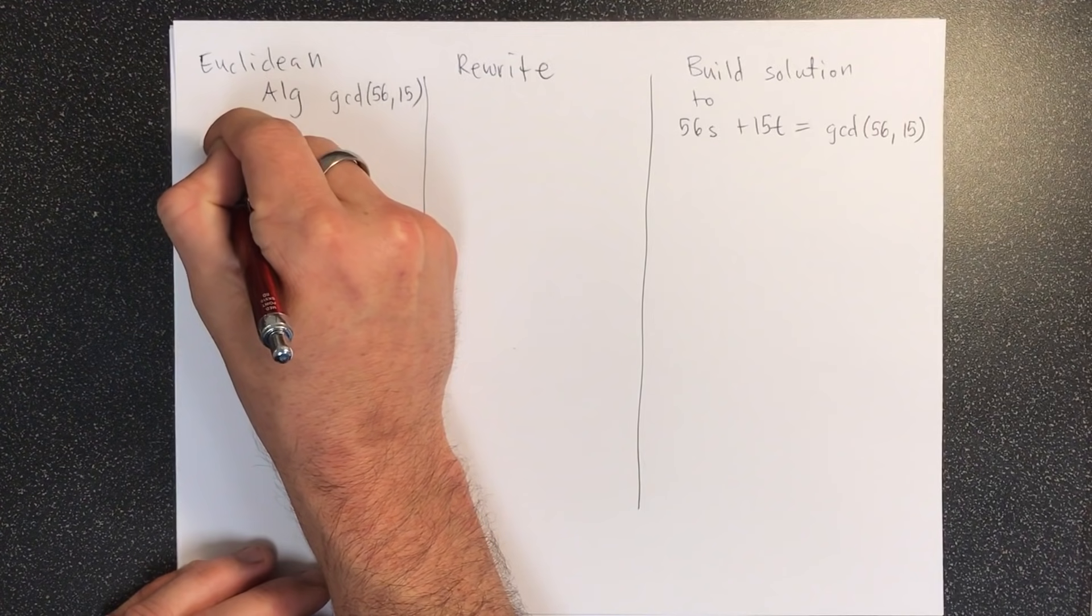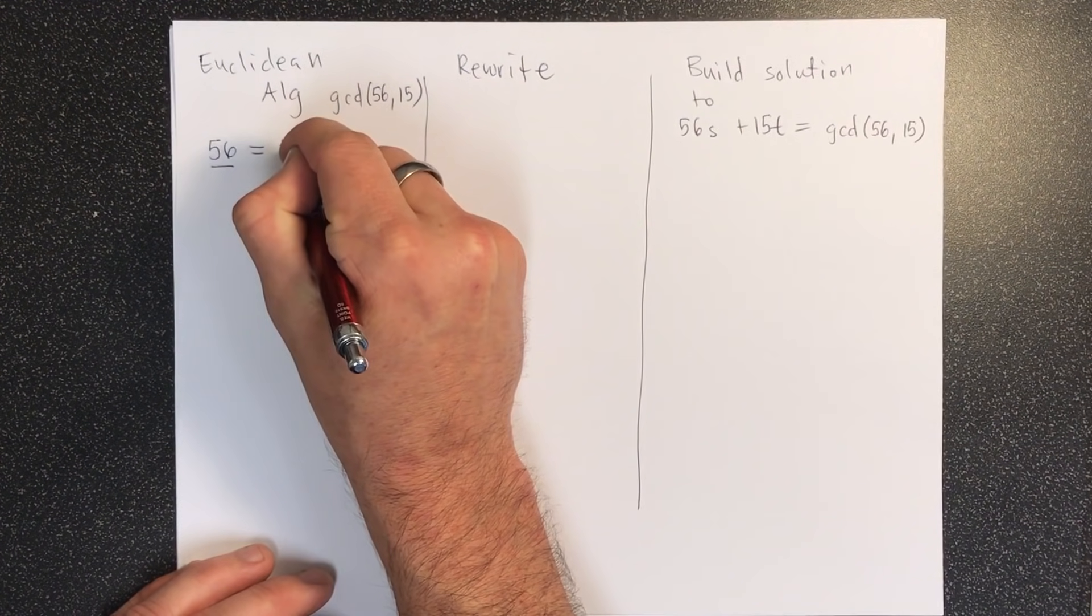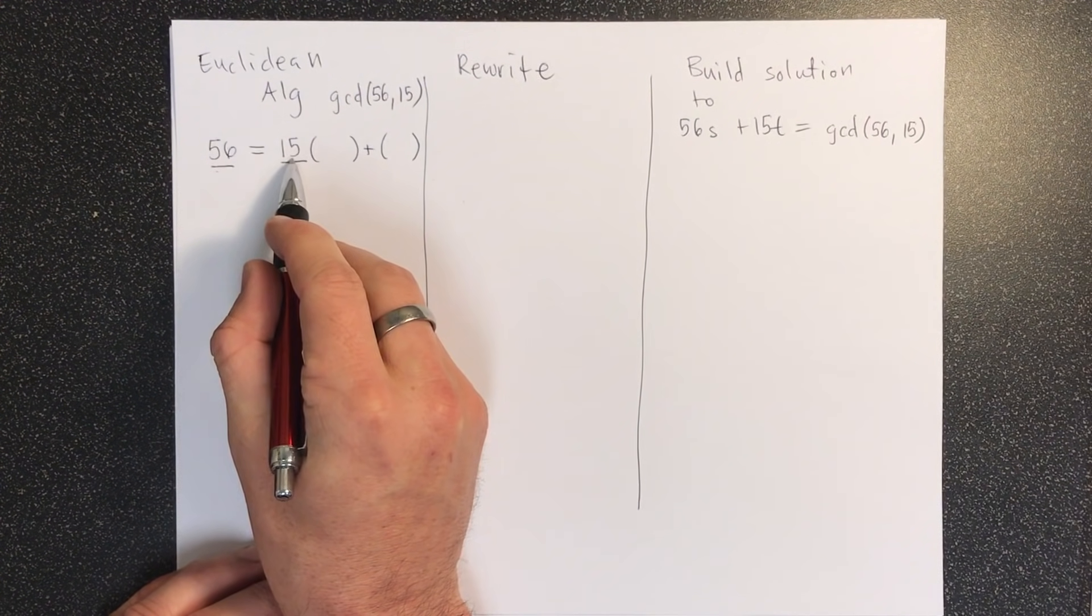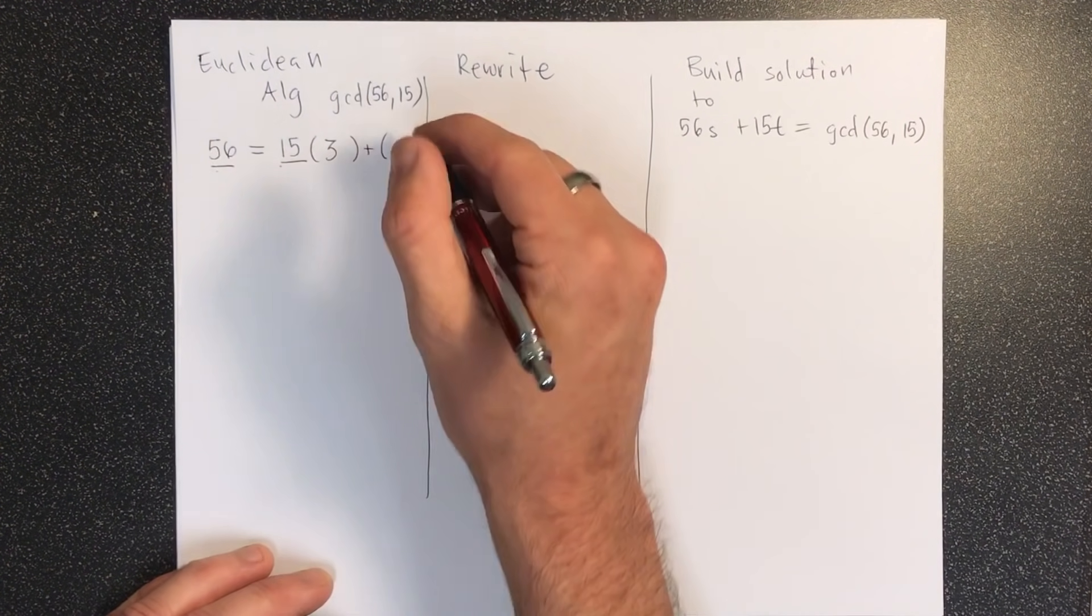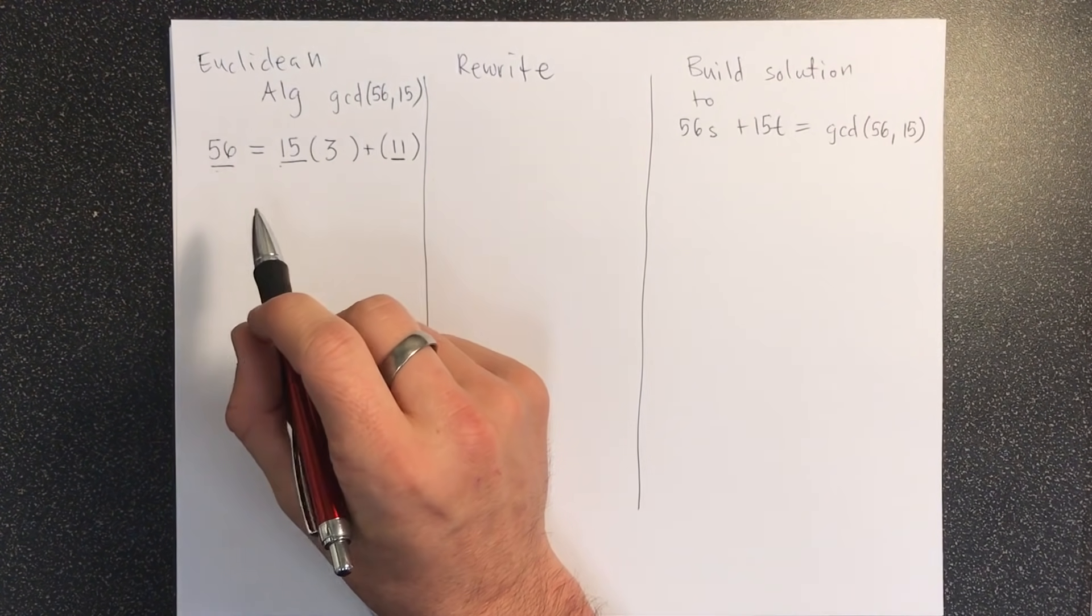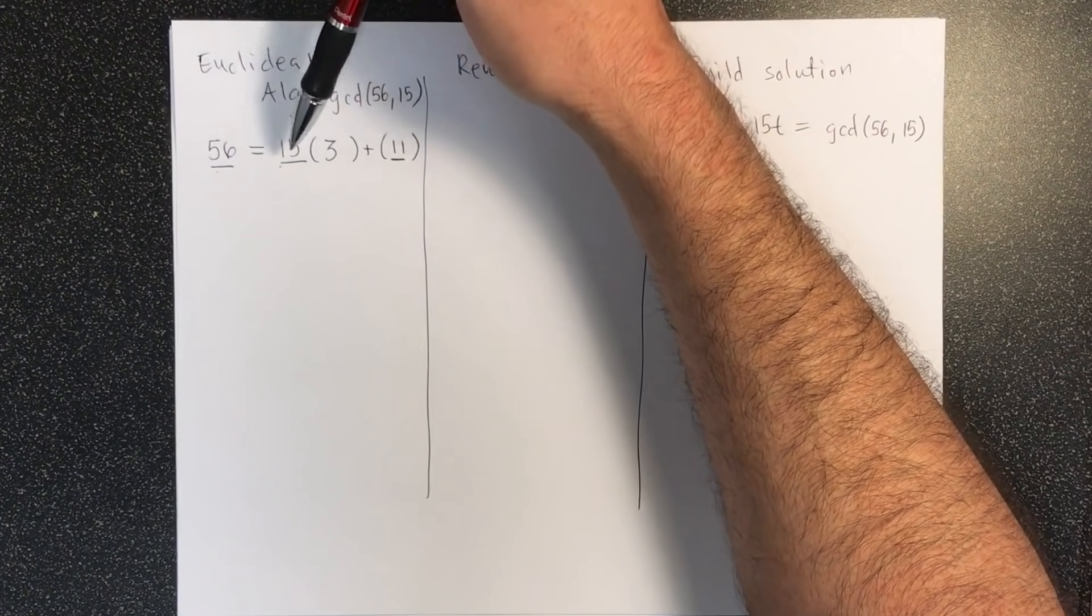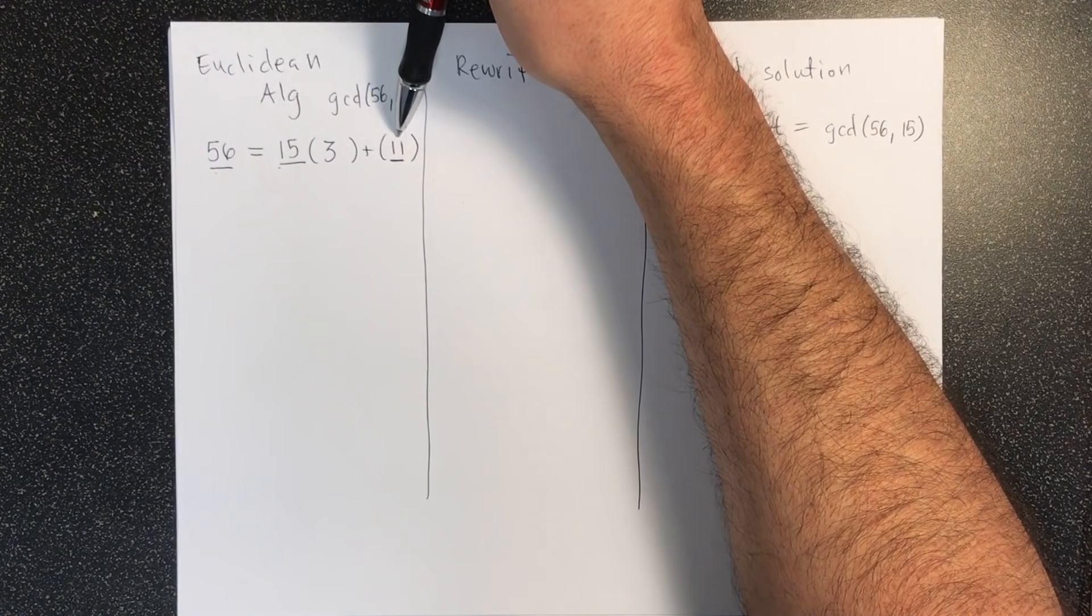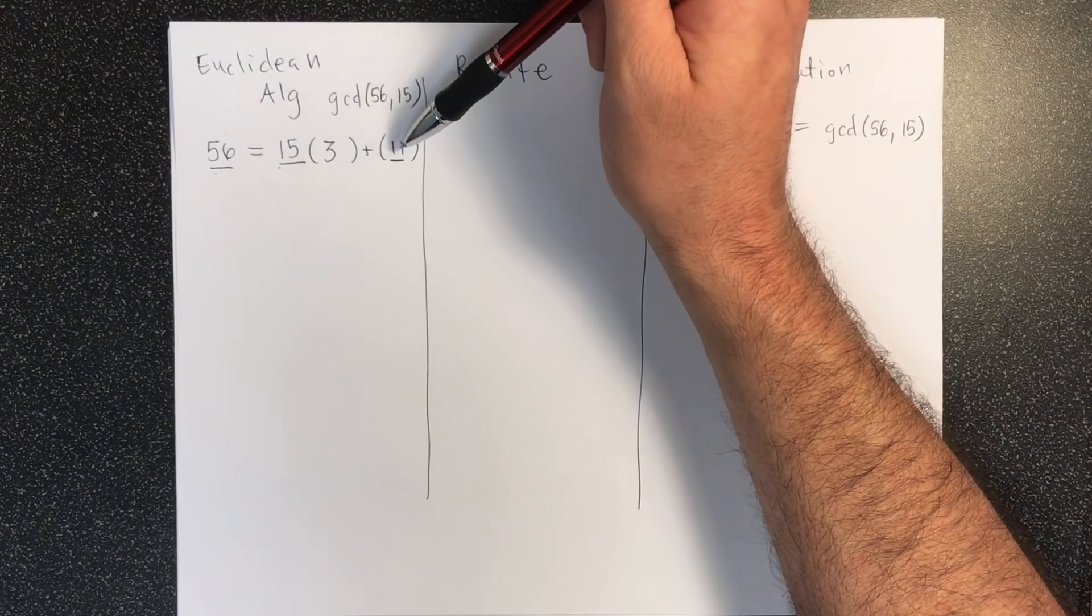So we start by putting 56 on one side, setting it equal to 15, and then finding the quotient and remainder of 56 divided by 15. So you should be able to see that the quotient is 3, which is going to give me 45, and I have a remainder of 11. It's going back to your fundamental theorem of fourth grade. And notice what I've done here. What I've done here is I've underlined the divisor and dividend here, and I have not underlined the quotient. I have also underlined the remainder. And we're going to do this each time, and we'll see why I care about tracking these underlined numbers in a minute.